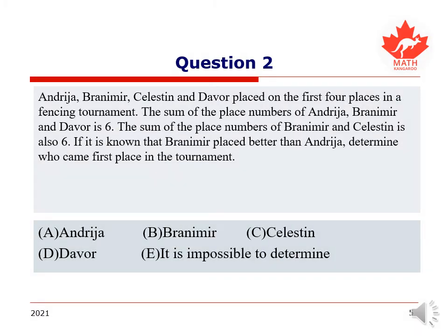Here is our second question. Andrea, Bronimir, Celestin, and Dava placed on the first four places in the fencing tournament. The sum of the place numbers of Andrea, Bronimir, and Dava is six. The sum of the place numbers of Bronimir and Celestin is also six. If it is known that Bronimir placed better than Andrea, determine who came first in the tournament.